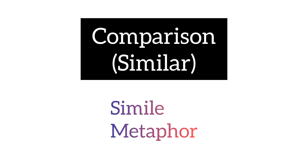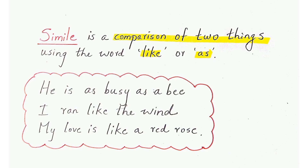The first category covers figures of speech which involve comparison of two similar things. Here we have simile and metaphor. A simile is the comparison of two similar things, and you have to remember that a simile compares two things using the words 'like' or 'as'. For example, when I say 'Anu is sweet like honey' — both Anu and honey are sweet, and I am comparing them using the word 'like'.